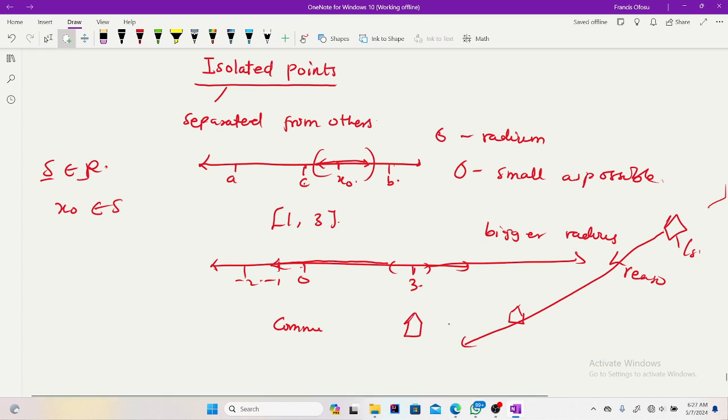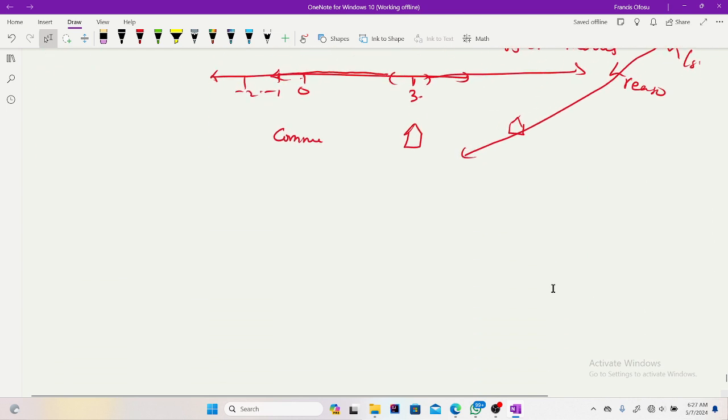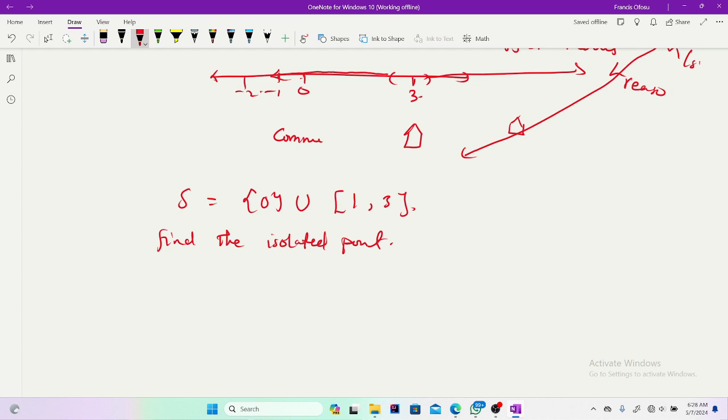But isolation deals with reasonable radius. So with a reasonable radius, if I'm not finding anyone, then I'll say that you are isolated. That's the concept of isolated points in this manner. Now let me give a question so you understand it better. So let's see, I have the set S which is equal to 0 union, let's say, [1,3]. How do we do this?